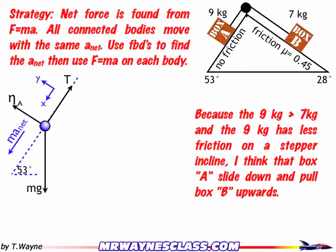Now my coordinate system. I'm going to go parallel to ma net and perpendicular to ma net. If I didn't have a net acceleration, I would go parallel to the incline and perpendicular to the incline. But since I have a net acceleration, I'll go parallel and perpendicular to it. Notice that the positive direction is down, the same direction as ma net. So ma net establishes the direction and what's positive.